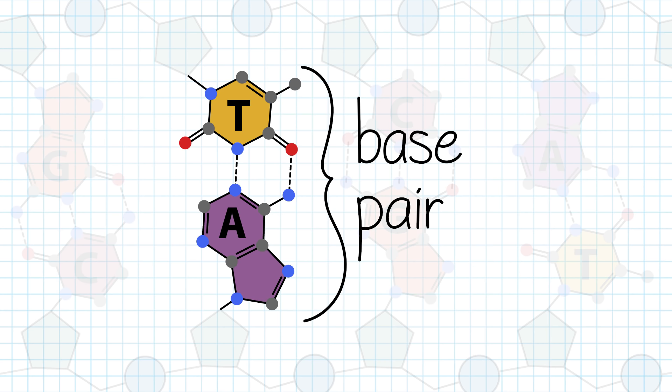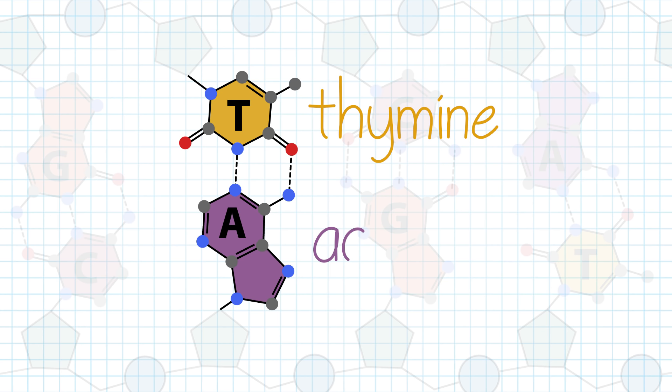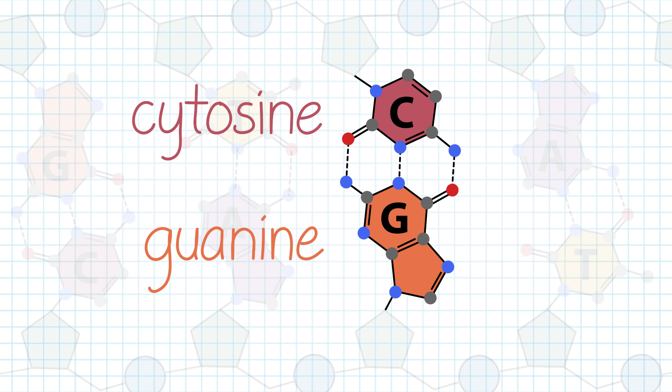The hydrogen bonding contributes to the specificity of base pairing. Thymine preferentially pairs with adenine through two hydrogen bonds and cytosine preferentially pairs with guanine through three hydrogen bonds.